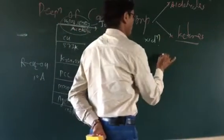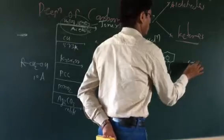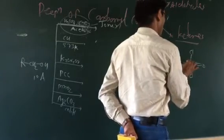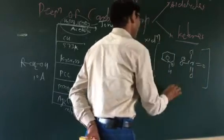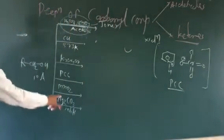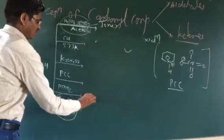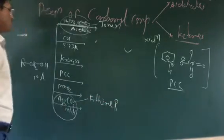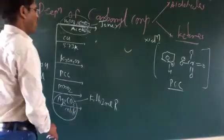PCC — pyridinium chlorochromate — contains a nitrogen atom, a hydrogen, chlorine, a ClO3 negative group, and N positive. This is the structure of PCC. Ag2CO3 on celite is the Fetizon reagent. Such types of oxidizing reagents are used for the preparation of the carbonyl compound.